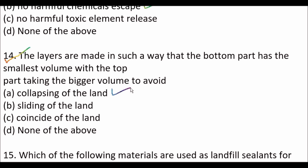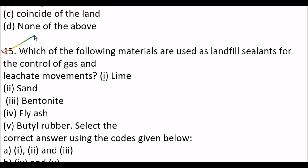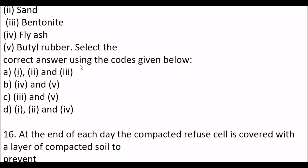Next question: which of the following materials are used as landfill liners for the control of gas and leachate movements? Materials listed: (1) lime, (2) sand, (3) bentonite, (4) fly ash, (5) butyl rubber. Options: A, first, second and third; B, fourth and fifth; C, third and fifth; D, first, second and fourth. Right answer is option C, only third and fifth — bentonite and butyl rubber.